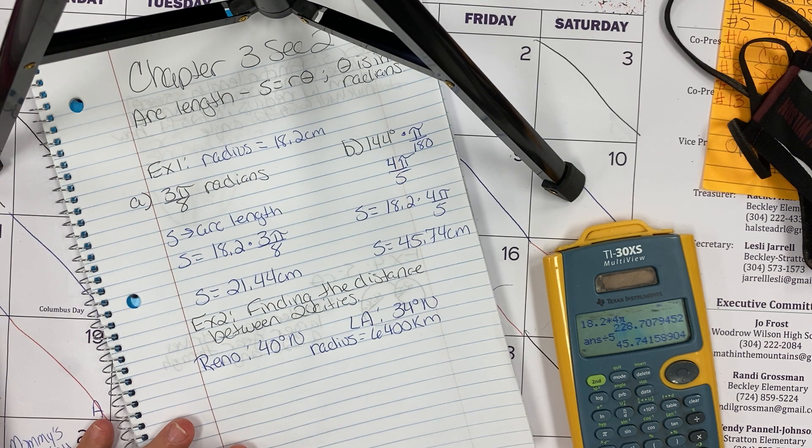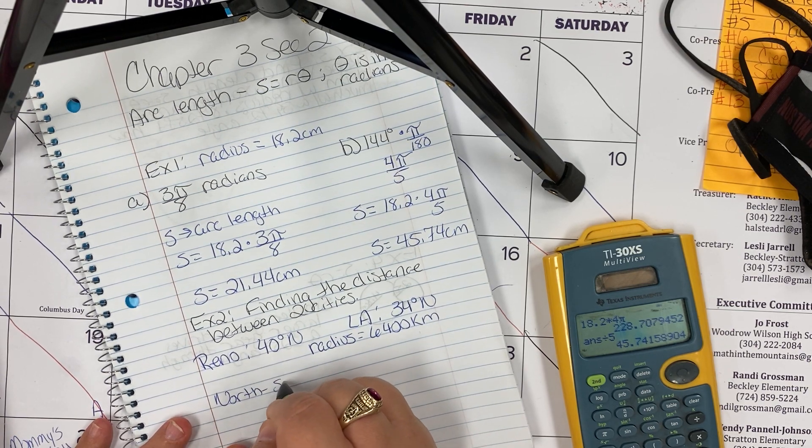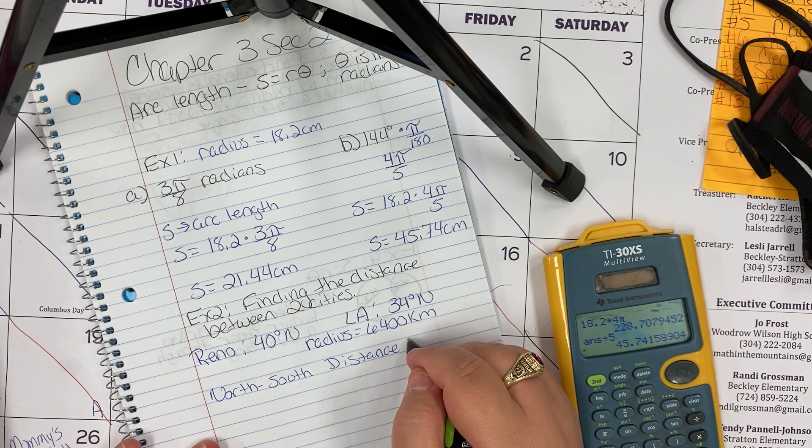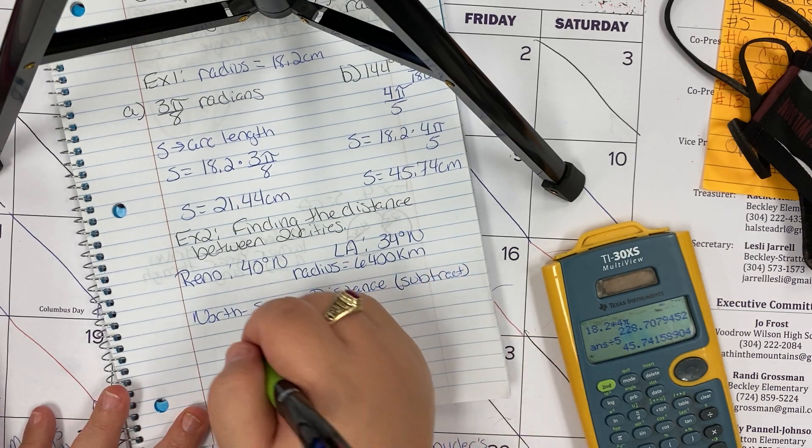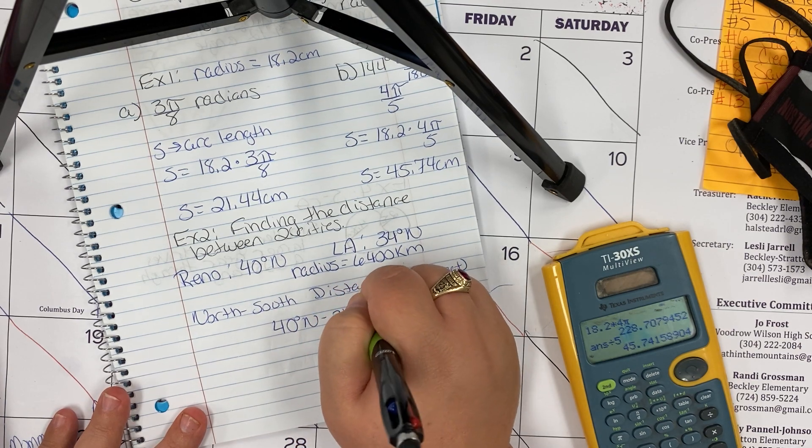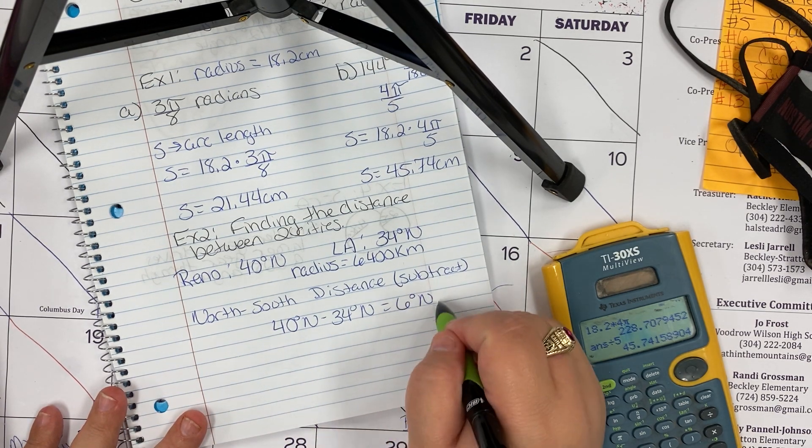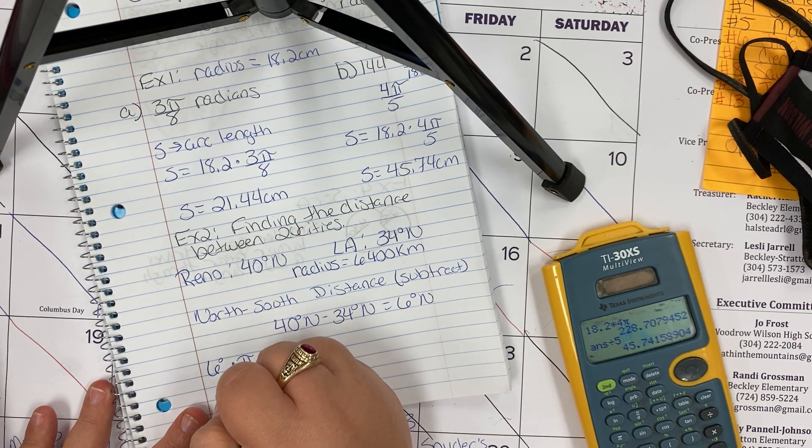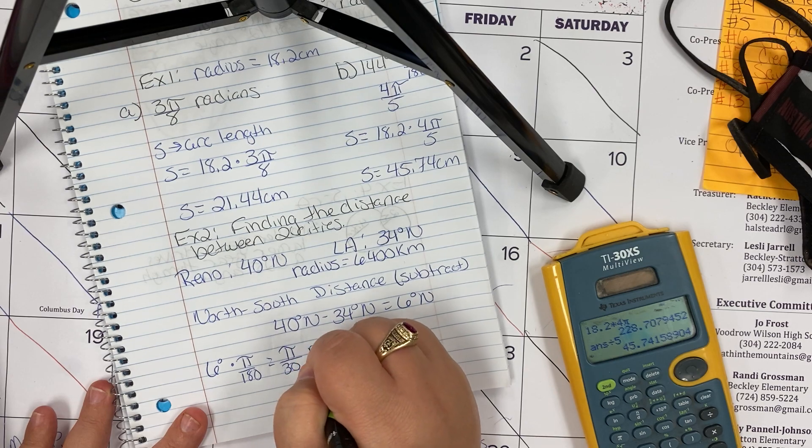Find the north-south distance between the two cities. Anytime you see the word distance, subtraction should come into mind. So I need to subtract those two degrees: 40 degrees north minus 34 degrees north gives me a distance of 6 degrees north. Since that's a degree I need to change it to radians, so 6 degrees times π over 180 is going to give me π over 30 radians.